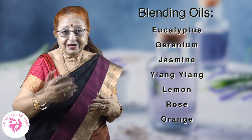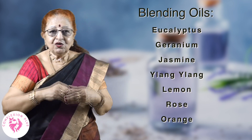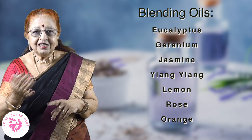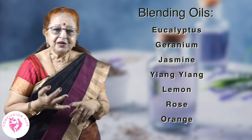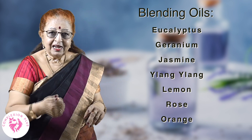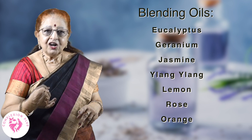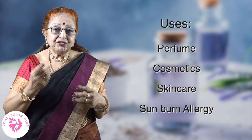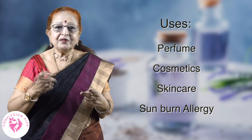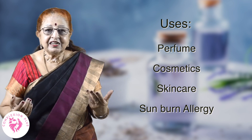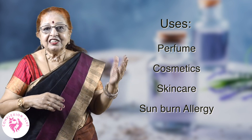Lavender oil blends well with other oils. You can blend it with eucalyptus, geranium, jasmine, ylang-ylang, lemon, rose, and orange. In general, you can use lavender oil in perfume, cosmetics, skincare, and for sunburn and allergy relief.